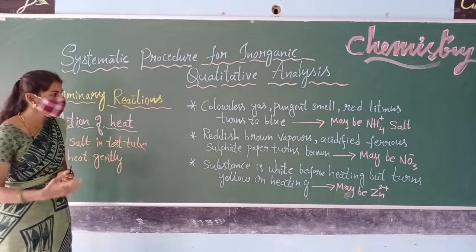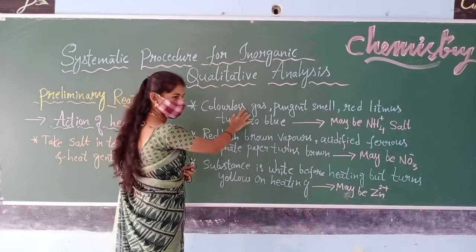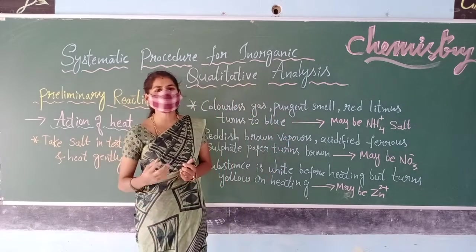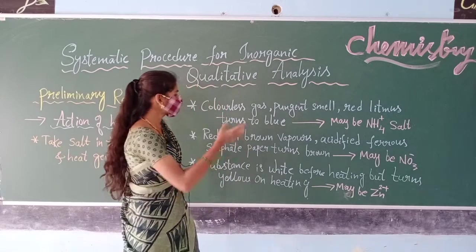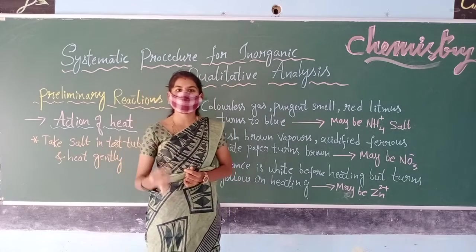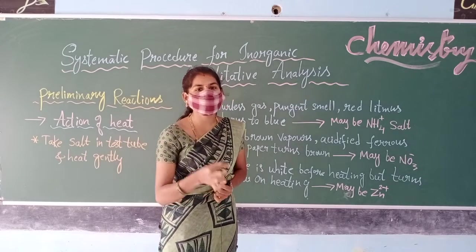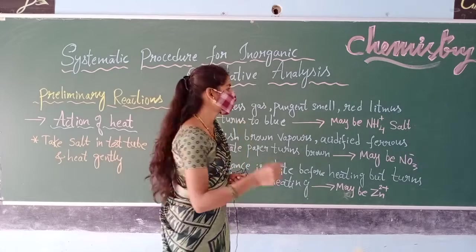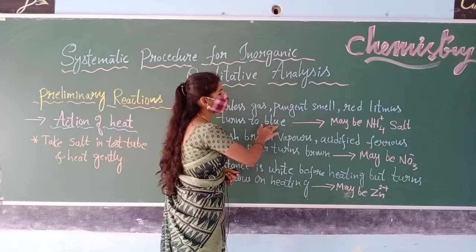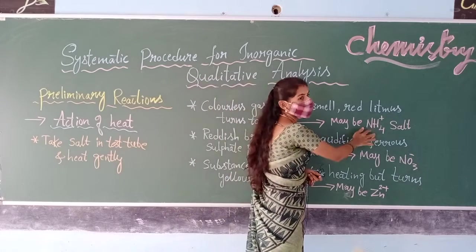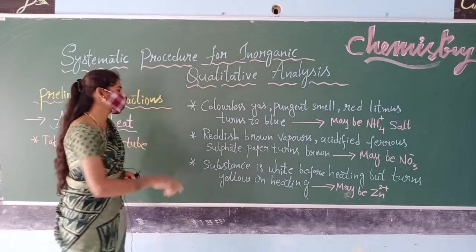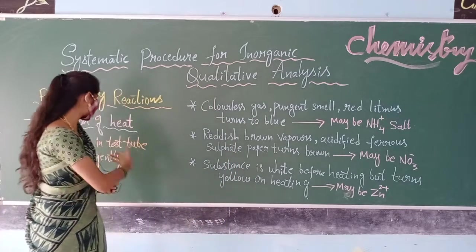When we heat the salt gently in the test tube, if we get a colorless gas with a pungent smell — that is, a bad odor — and when we place red litmus paper at the mouth of the test tube and it turns blue, then we can confirm that the given salt is an ammonium salt, that is NH4.